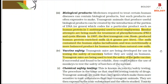3. Biological Products: Medicines required to treat certain human diseases can contain biological products, but such products are often expensive to make. Transgenic animals that produce useful biological products can be created by introducing genes which code for a particular product — such as human protein alpha-1-antitrypsin used to treat emphysema. Similar attempts are being made for treatment of phenylketonuria (PKU) and cystic fibrosis. In 1997, the first transgenic cow, Rosie, produced human protein-enriched milk at 2.4 grams per liter, containing human alpha-lactalbumin — nutritionally a more balanced product for human babies than natural cow milk.